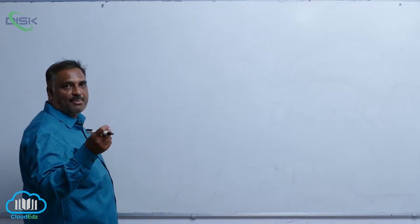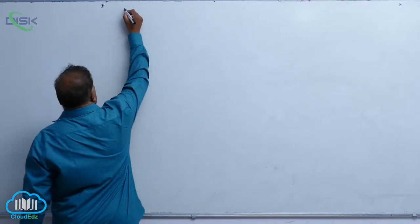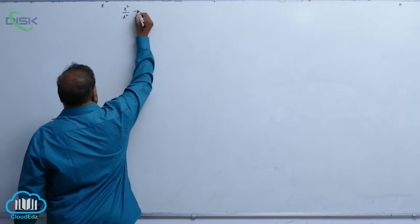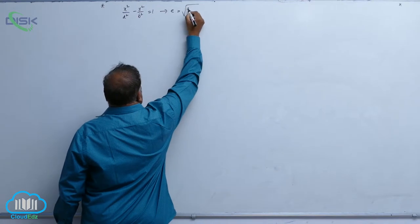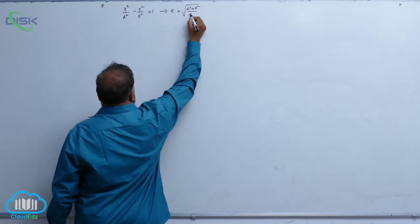Let us discuss a special property of hyperbola. Suppose you consider x square by a square minus y square by b square equal to 1 with eccentricity root of a square plus b square by a square.